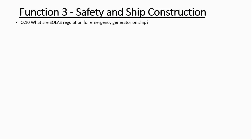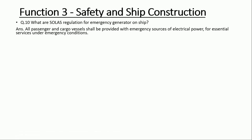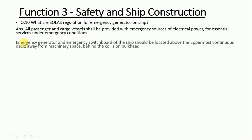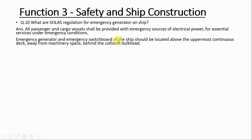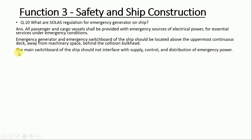Question number ten: what are the SOLAS regulations for emergency generators on ships? All passenger and cargo vessels shall be provided with an emergency source of electrical power for essential services. The emergency generator and emergency switchboard shall be located above the uppermost continuous deck, away from the machinery space and behind the collision bulkhead. The main switchboard shall not interfere with the supply, control, and distribution of emergency power.